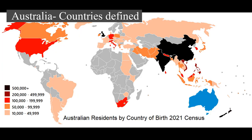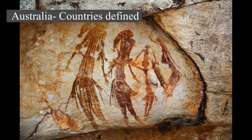Australia is the oldest, flattest, and driest inhabited continent with the least fertile soils. It is a megadiverse country, and its size gives it a wide variety of landscapes and climates, with deserts in the center, tropical rainforests in the northeast, and mountain ranges in the southeast.